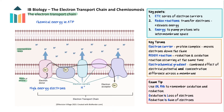Before we look at chemiosmosis, let's look more closely at how electrons are passed along the chain. The protein complexes act as electron carriers, functioning as electron donors and acceptors. Electron donors pass their electrons to electron acceptors; in doing so, the donors are oxidised and the acceptors are reduced. Because one molecule is reduced while the other is oxidised, these are known as redox reactions. Remember OIL RIG: oxidation is the loss of electrons, reduction is the gain of electrons.